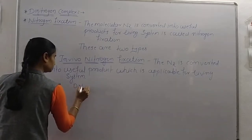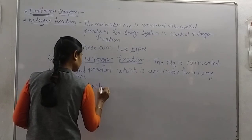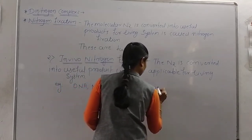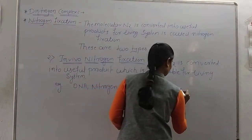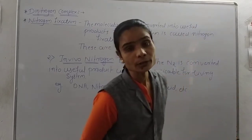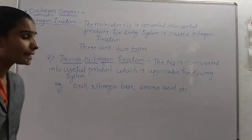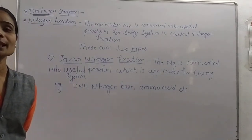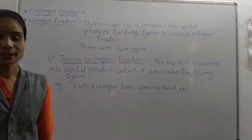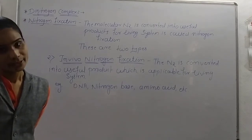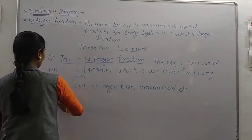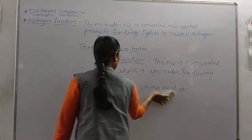For example, DNA, nitrogen bases, purine, pyridine, pyrimidine, and amino acids. All these are examples of in vivo nitrogen fixation. In vivo nitrogen fixation is applicable for the living system. So these are the two types of nitrogen fixation: in vitro nitrogen fixation and in vivo nitrogen fixation.